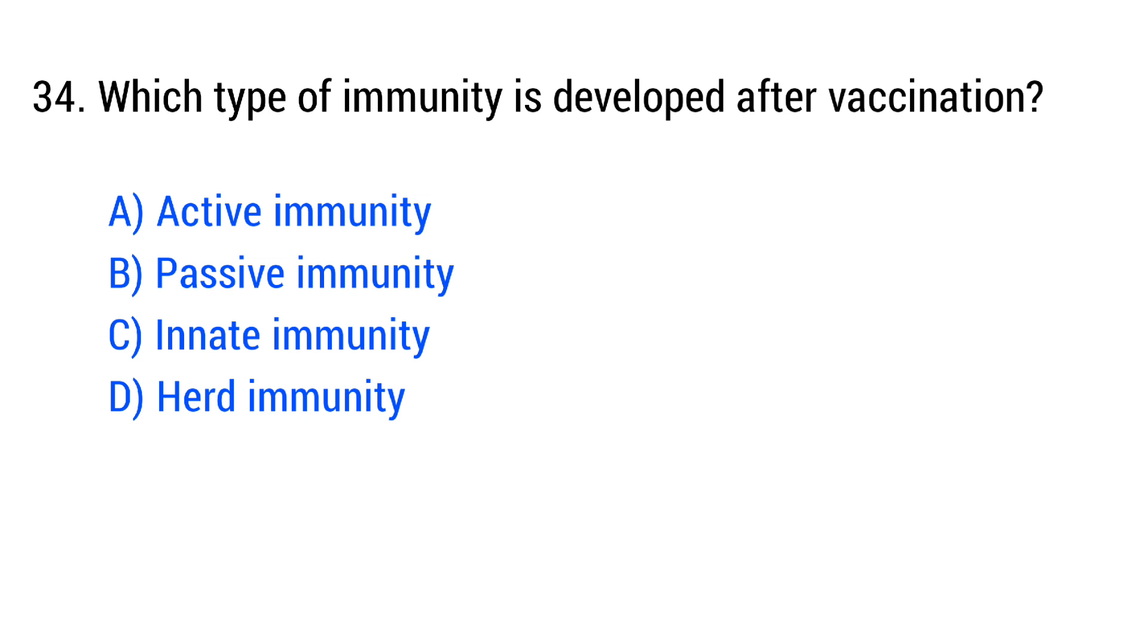Question number 34. Which type of immunity is developed after vaccination? The right answer is Option A, active immunity.